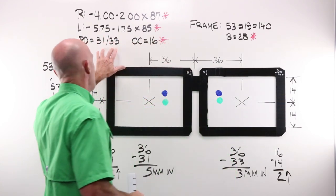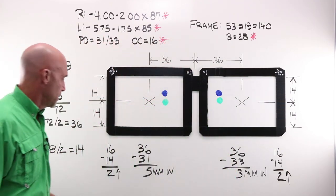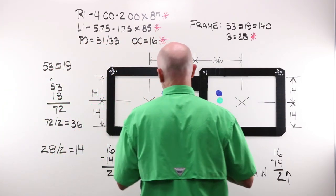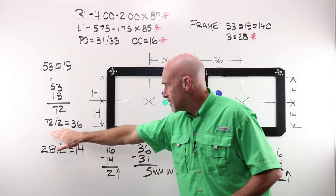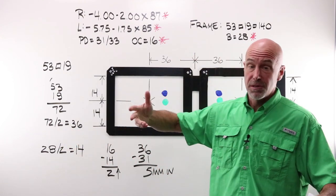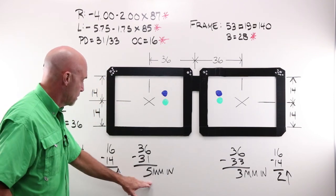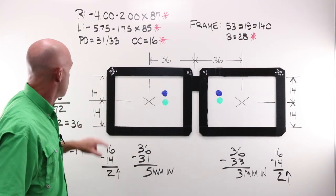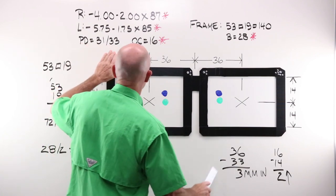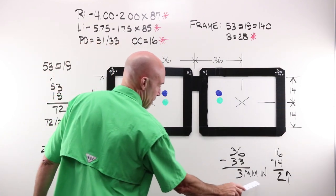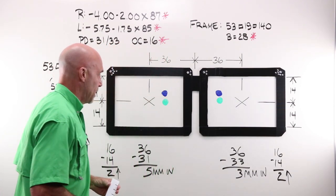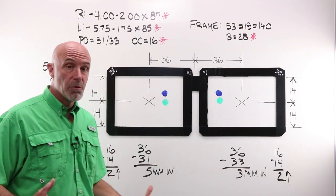So we have a frame PD geometric center to center of 72. We have a monocular PD of 31 and 33, so I'm going to need two numbers for my frame. So I'm going to take my 72, divide it by two and have 36. 36 minus 31 gives me five millimeters in decentration in my right. 36 minus 33 gives me three millimeters in my left. Same thing that we've been doing.